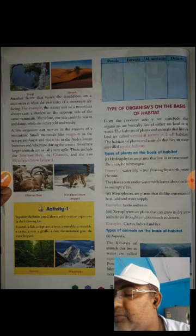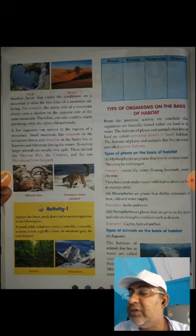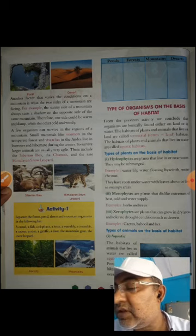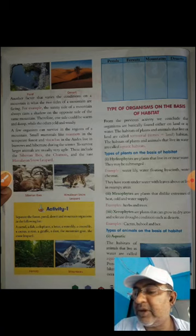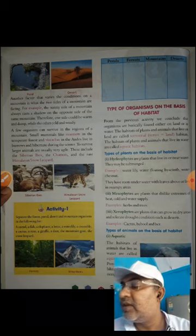Page number 62. There are different types of organisms that live in different areas. Here it is the Siberian Ibex and the Himalayan Snow Leopard. This Himalayan Snow Leopard cannot live in our forest — it lives in the snow.